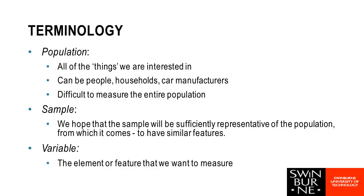The other term we're interested in is what's called a variable. A variable is something that we have measured — it could be age, height, weight, or income. Anything that we're measuring within our sample we refer to as a variable.